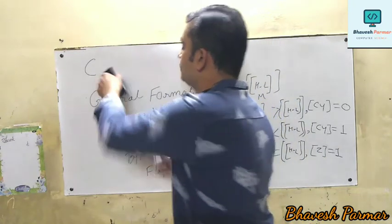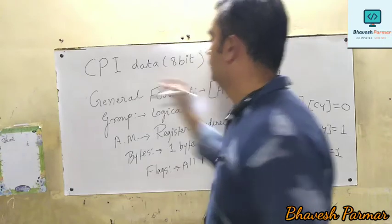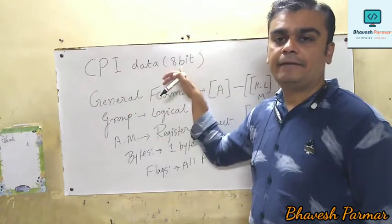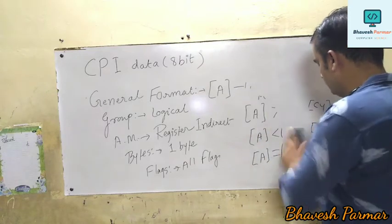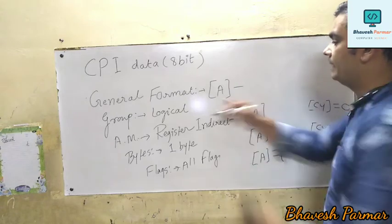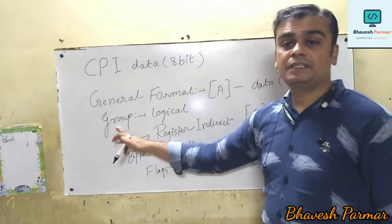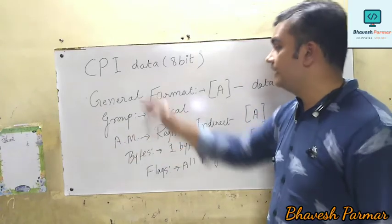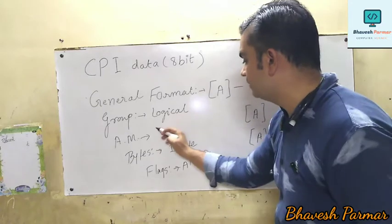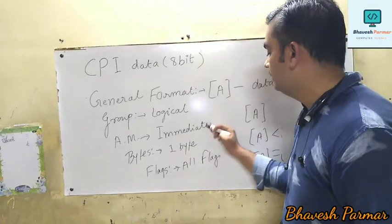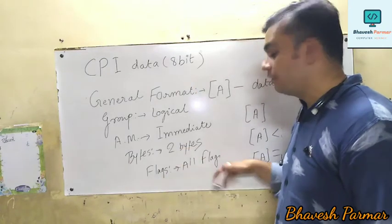The third compare instruction is CPI data, where data is always an 8-bit number. The general format is: content of A minus data (8-bit). The group is logical group instruction. Since we are performing the operation on 8-bit immediate data, the addressing mode is immediate addressing mode. Because we operate on 8-bit data, this is a two-byte instruction.